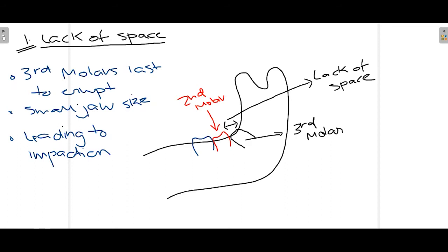Regarding lack of space — the third molars are the last teeth to appear in the oral cavity, which normally leads to decreased space available for them to erupt. As you can see in the diagram, there is only a limited space available in the jaw for the third molar to erupt after the first and second molars have adjusted themselves. This lack of space leads to impaction — the third molar hits either the ramus, the second molar, or remains embedded in the bone.